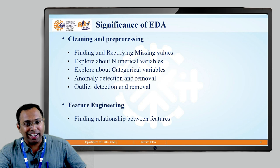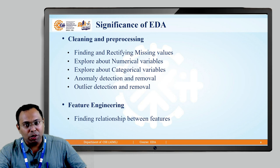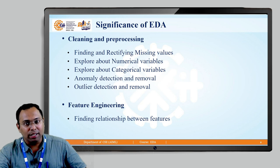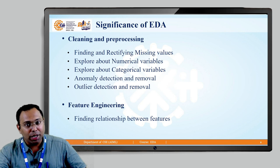Point number 3 is exploring the categorical variables. I will discuss categorical variables in depth in the next video, but for now there are two kinds: those considering numbers and those considering categories. Specifically, there are binary categorical variables, ordinal categorical variables, and nominal categorical variables. We need to identify each of these variables separately.